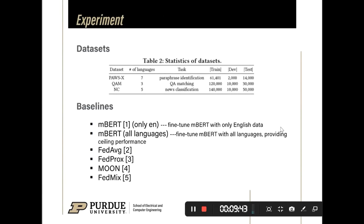The second dataset is about the task QA matching. And the third dataset is about the news classification task.